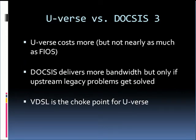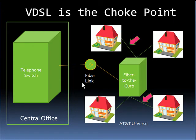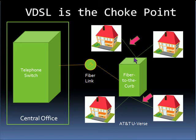In comparing U-Verse to the DOCSIS 3.0 cable standard, we note that U-Verse still costs more, but not nearly as much as FIOS. DOCSIS does deliver more bandwidth, but only if it can overcome the legacy issues we recently discussed. VDSL remains the choke point for U-Verse architectures. While the fiber link between the central office and the curbside terminal is never a bandwidth bottleneck, the VDSL copper loops that run from the curbside terminal to the home represent the single most important choke point in a U-Verse architecture. Specifically, the upstream bandwidth is likely to be significantly less than FIOS and even less than what DOCSIS 3.0 provides.